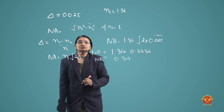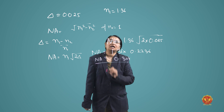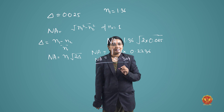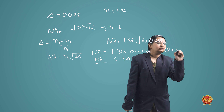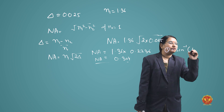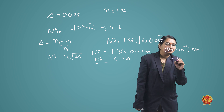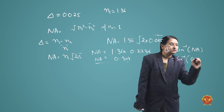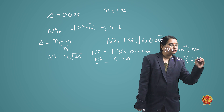The final numerical aperture is 0.304. Now for the acceptance angle: theta is equal to sin inverse of the numerical aperture, that is sin inverse of 0.304.